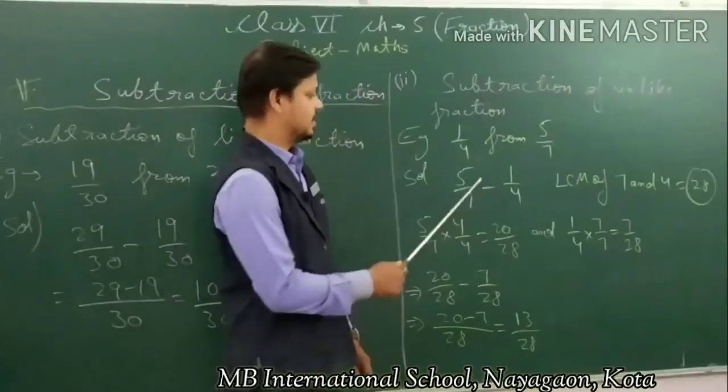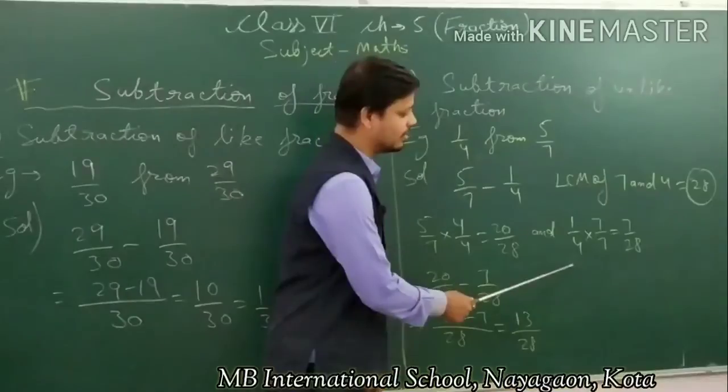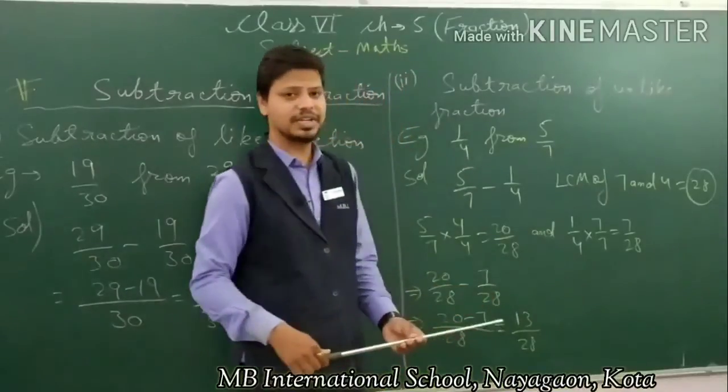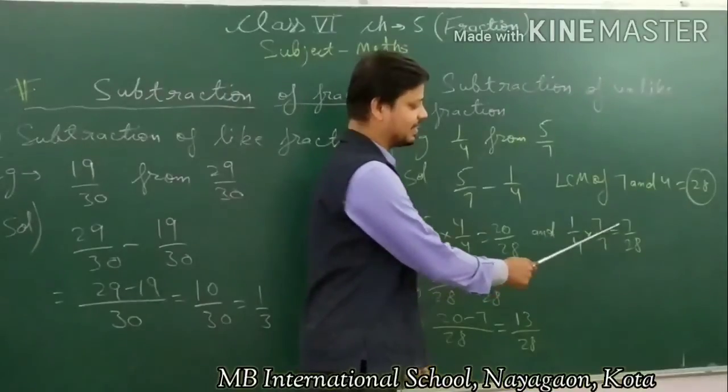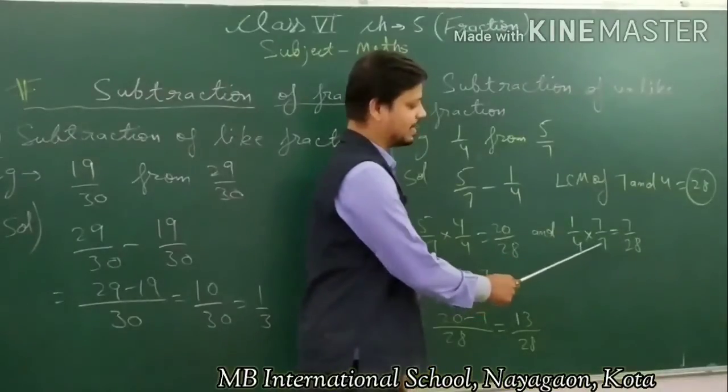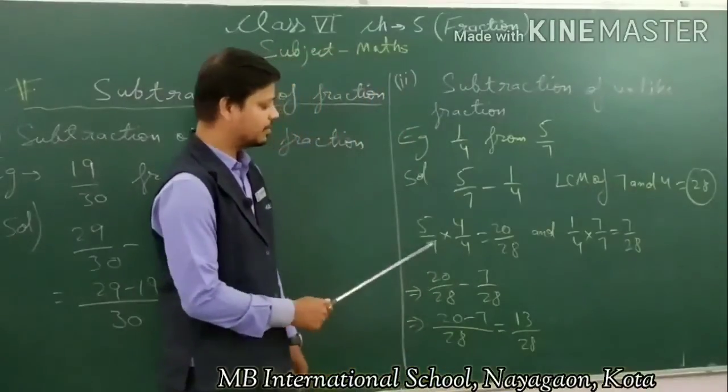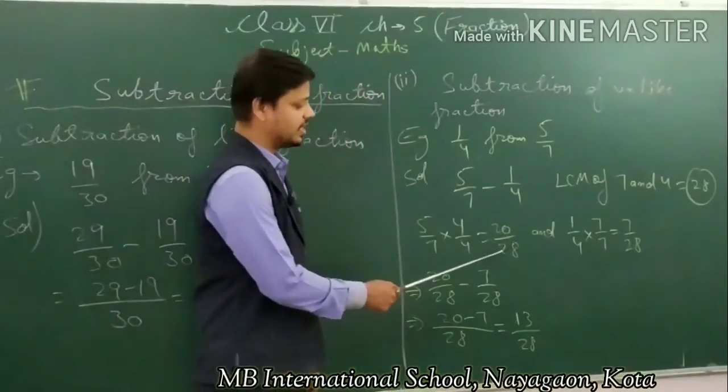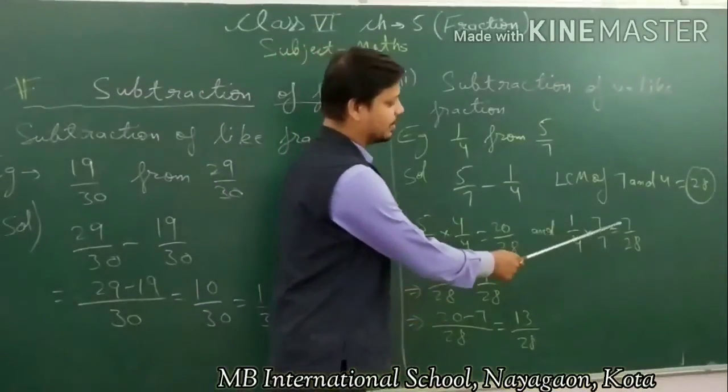Similarly, our second fraction is 1 upon 4. Here the denominator is 4. You have to convert this to 7 upon 28.